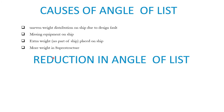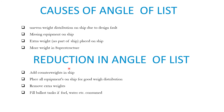Now let's discuss the reduction in the angle of list. First, add counterweight in the ship. Second, place all the equipment on the ship for good weight distribution. Third, remove extra weights and fill the ballast tanks if fuel, water, etc. have been consumed.